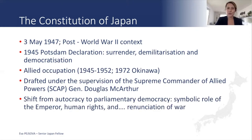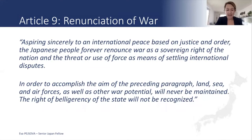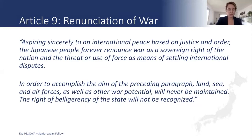As opposed to the previous Meiji Constitution of Japan, which was very much authoritarian and centered on the role of the Japanese Emperor, the new constitution establishes a democratic parliamentary system which promotes human rights and where the Emperor plays only a symbolic role. The key attribute and most novel part of the Japanese constitution is the complete renunciation of war, guaranteed by Article 9, where Japan forever renounces war as a sovereign right of the nation and the threat or use of force as means for settling international disputes.